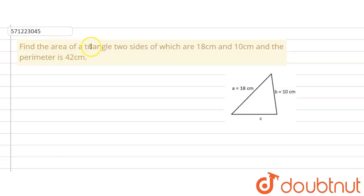The given question says that find the area of a triangle, two sides of which are 18 cm and 10 cm and the perimeter is 42 cm. So we are given the perimeter of the triangle and we are given the two sides and we are supposed to find out the area of this triangle. This triangle represents the given triangle, the triangle given in the question.